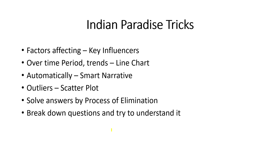Here are some tricks I've shared: if the keyword 'factors affecting' appears in a question, the answer will be Key Influencer. For 'over time period' or trends, the answer will be Line Chart. If 'automatically' keyword is used, then Smart Narrative. If 'outliers' keyword is there, then Scatter Plot. I'm telling this from four years of experience with that exam.